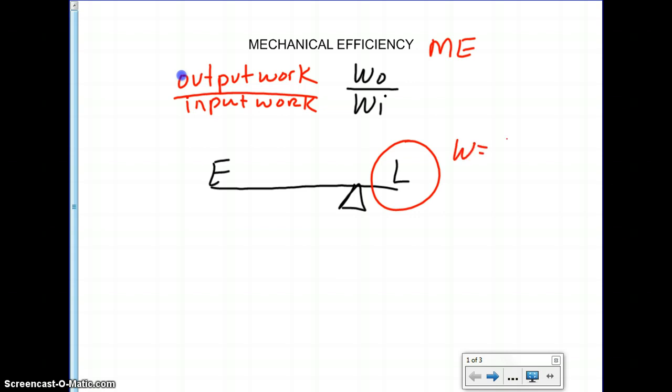Remember work is FD, so you're going to take the output force, which is the weight of the object in newtons, and to make life easier we're going to say that's 10 newtons, times the distance that it moves. We're going to make up 2 meters. So the output work on this machine is going to be 20 joules of work.